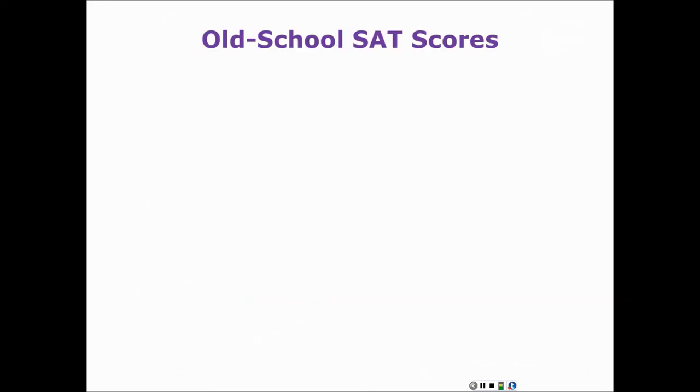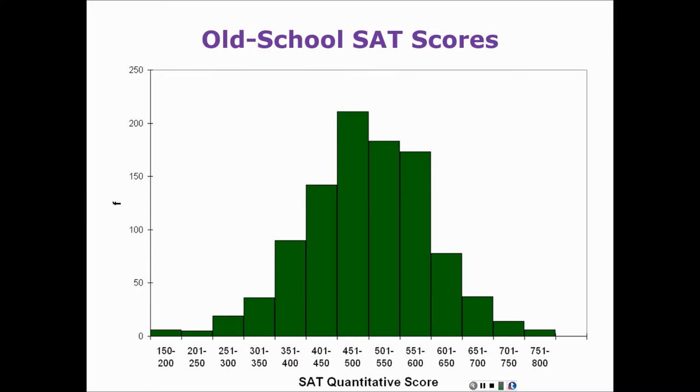So let's look at another distribution, old school SAT scores, back when they went from 200 to 800. I lumped those into categories of 50 points each. Now again, the bars touch on their sides, and that tells you you're looking at a histogram, not a bar chart. Also, you would never make these bars different colors. And so we see the categories here going from 150 to 200. This is actually fairly normal. I mean, it's not perfectly normal, but it's lumpy in the middle, and it tapers off on the ends. So this is not a bad normal distribution.